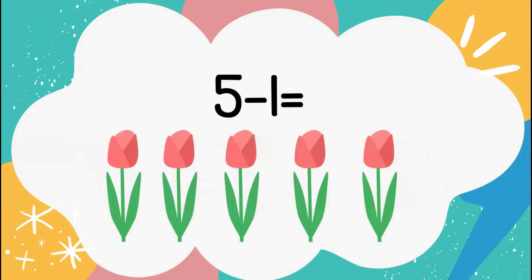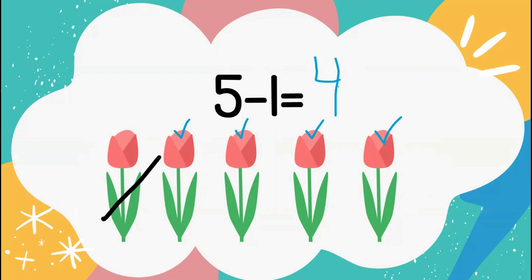Let's take a look at another subtraction problem. This time we have 5 minus 1 equals. I'm going to give you a minute to try to solve this on your own. Do you know the answer? 4 — excellent job. We need to get rid of 1 flower. We're going to subtract 1 and count the remaining: 1, 2, 3, 4. We have 4 flowers remaining. So 5 minus 1 equals 4.